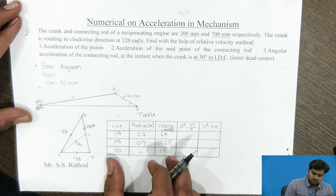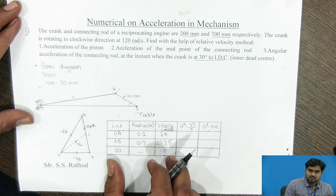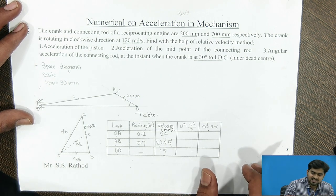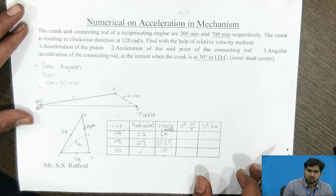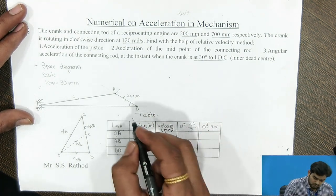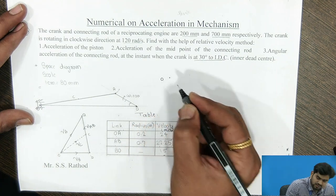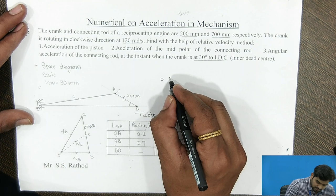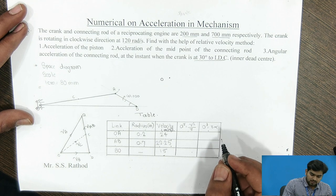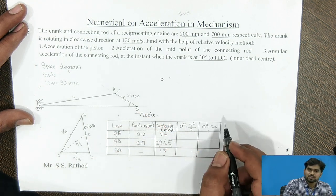Now the task is to draw the acceleration diagram. Consider one point at which the acceleration is zero. O is the fixed point at which the acceleration is zero, so we name it the O prime point. From the O point, the crank OA rotates with uniform constant angular velocity, so it has only one component — the radial component. The radial component always acts in the parallel direction to that link.